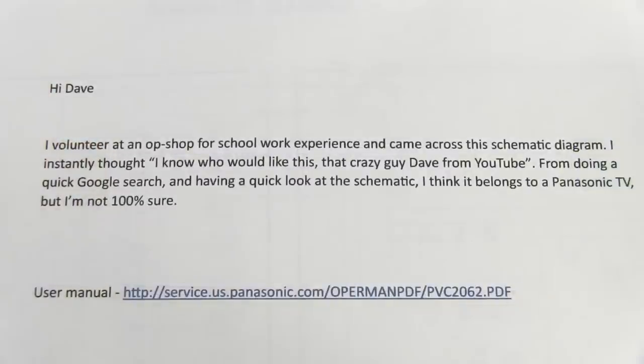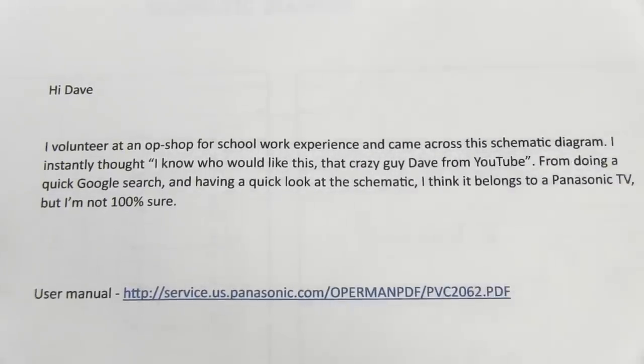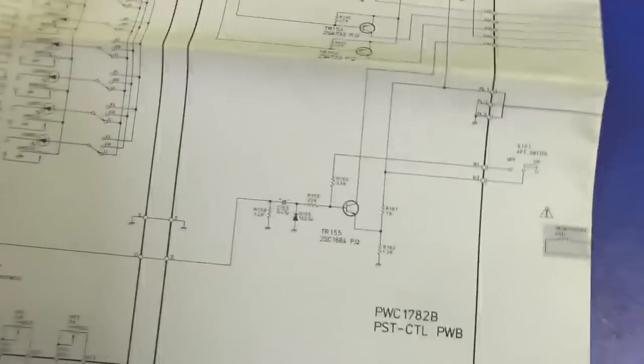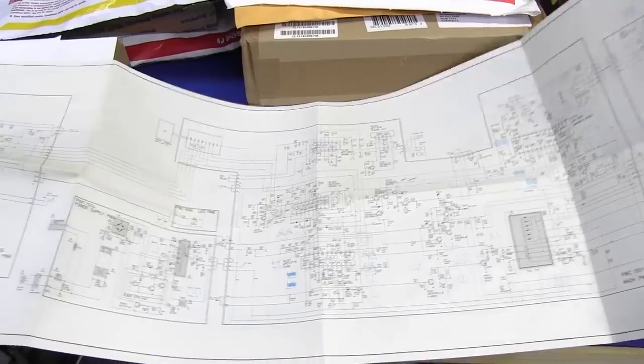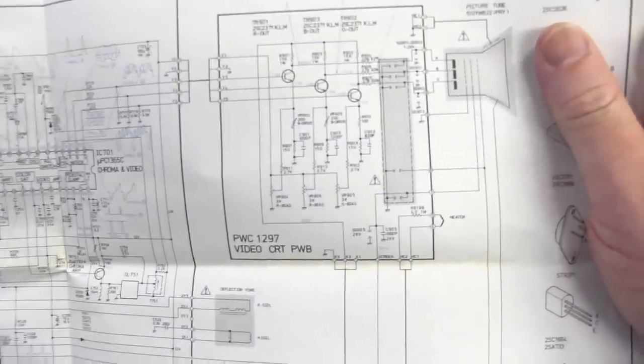So, I do wonder what it is. Wow, we've got schematic diagrams. Hi, Dave. I volunteer at an op shop for school work experience and came across this schematic diagram. Instantly thought, I know who would like this, that crazy guy Dave from YouTube. I'm doing a quick Google search and having a quick look at the schematic. I think it belongs to a Panasonic TV. But I'm not 100% sure. Well, given that, it's a service, what, I've got something from Panasonic. Let's take a look at it. Oh, this is huge. Big A3 size. I don't know if I can get all this in the one shot. Hang on. There's my bare feet. Well, it's one of these fold-out ones. It's absolutely enormous.